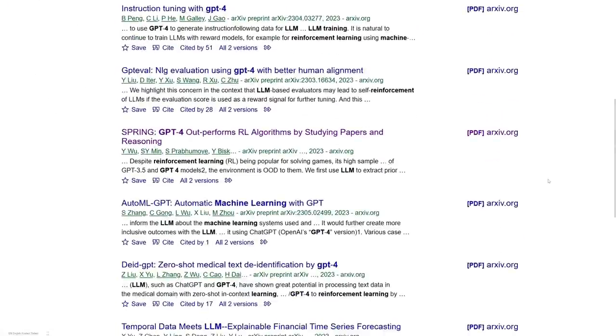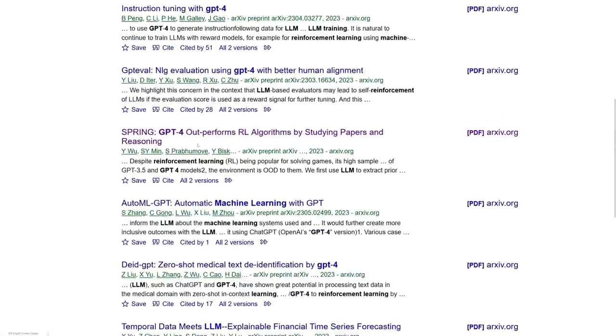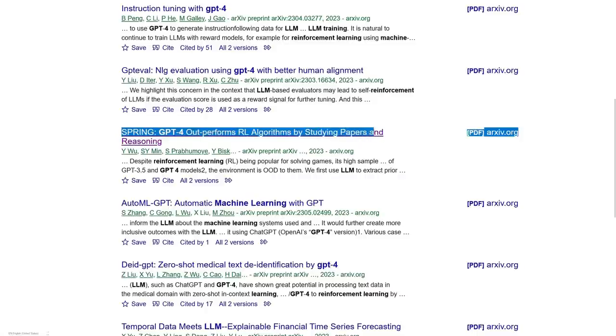So we started looking through new papers together, and one of the first things we see is this: Spring GPT-4 outperforms RL algorithms by studying papers and reasoning. I didn't even read the abstract, let alone the paper. I was just mad after reading this, fuming, seething with anger, like a volcano ready to rain down hell from above.